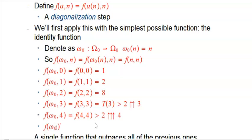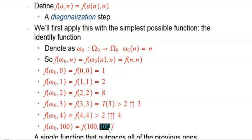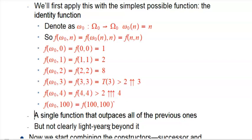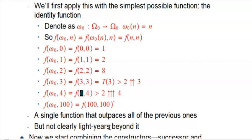If we've got f of omega-naught of 100, suddenly that is way beyond anything we did explicitly before. Because I'd have to talk about f of 5 something, f of 6, f of 7, all the way up to f of 100 — and f of 100 would be so, so much faster growing than even f of 99, which is so much faster than f of 98, et cetera. And then I'm plugging 100 into that function. This is a single function that outpaces every single other function in the sequence.